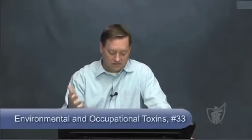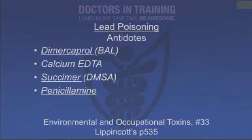Treatment of lead poisoning involves chelation to bind lead and remove it. Agents include dimercaprol (BAL — IV), calcium EDTA (IV), succimer (DMSA — oral), and penicillamine. These all work by different mechanisms. Caution: some of these can temporarily increase lead levels by leaching it from storage, so be careful in patients with already very high lead levels.